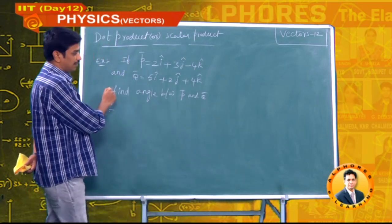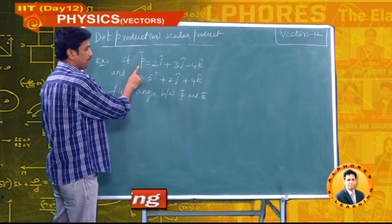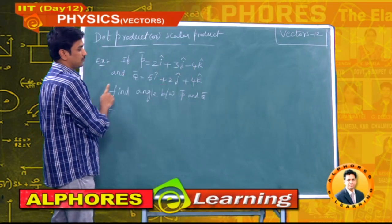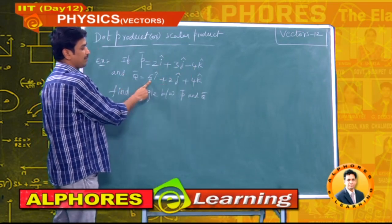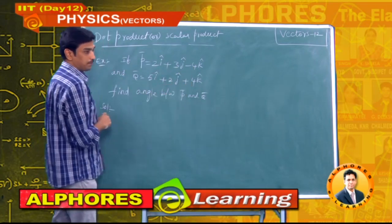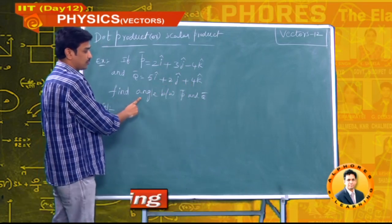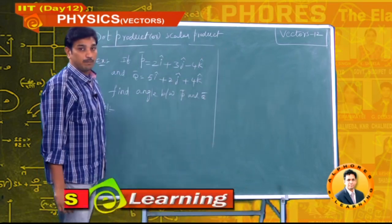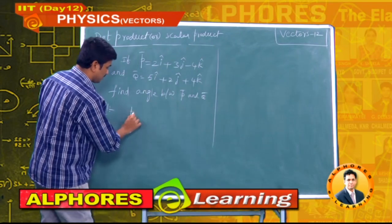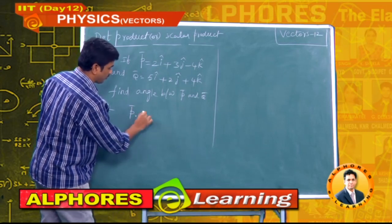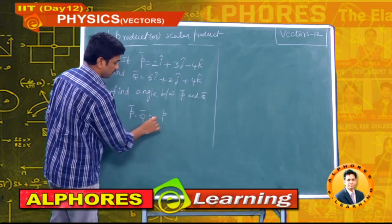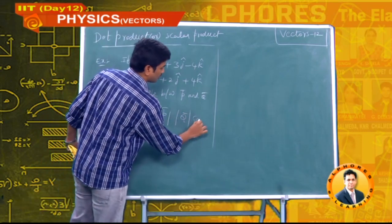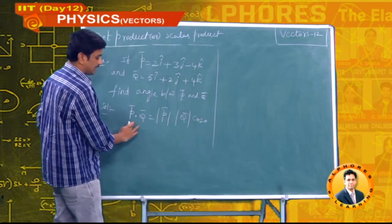I am framing the question: p̄ = 2î + 3ĵ − 4k̂ and q̄ = 5î + 2ĵ + 4k̂. They are asking us to calculate the angle between p̄ and q̄. The formula is: p̄ · q̄ = |p̄| |q̄| cosθ, where θ is the angle between p and q.